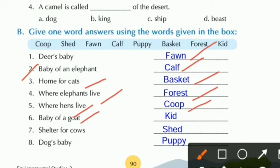Number five: Where hens live — it is coop, C-O-O-P. Number six: Baby of a goat is kid, K-I-D. Number seven: Shelter for cows is shed, S-H-E-D.